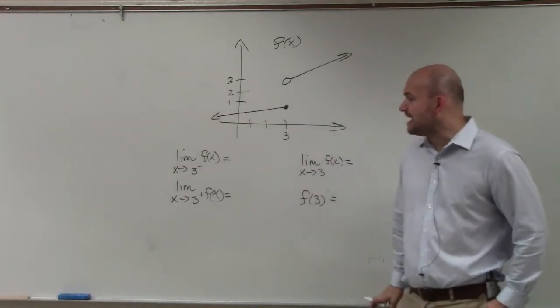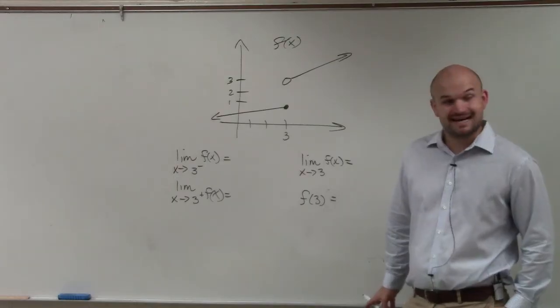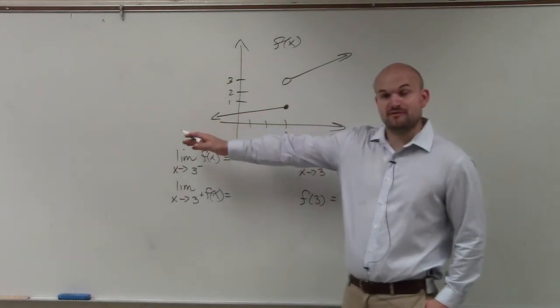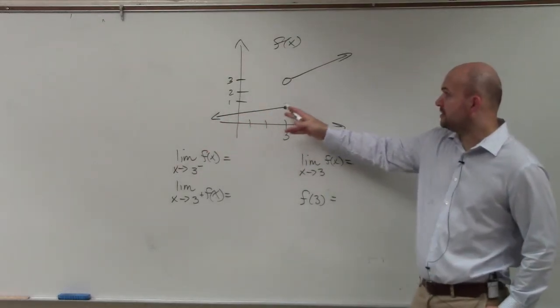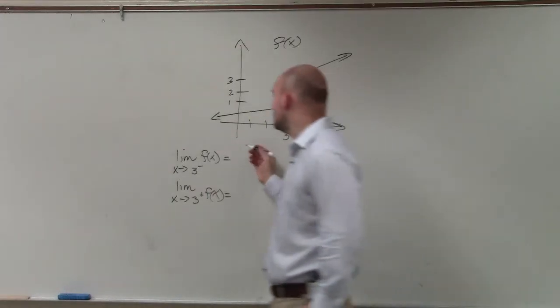So in this case, we have the limit of f of x as x approaches 3 from the left hand side. So basically, we're following from the left hand side. And as we approach 3, we see that the f of x value is going to equal 1.